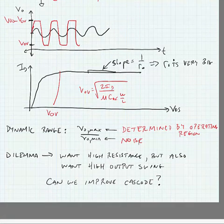So we have a dilemma. We want to achieve a high resistance, and we know that if we cascode we can achieve this high resistance, but it really limits the output swing that we can achieve, which we also want a very large output swing simultaneously. So what we're going to do in the next set of slides is look at how we can improve the cascode.